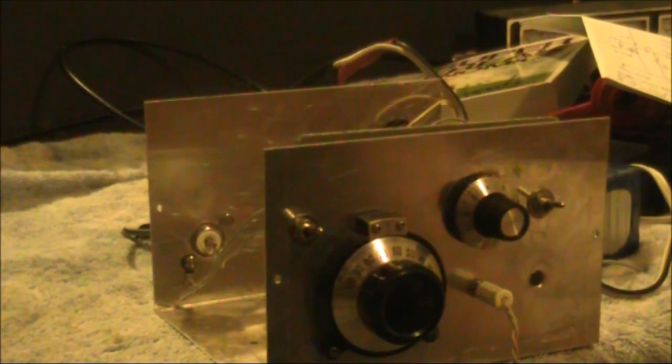Regen receivers have the reputation of being a two-handed affair. If you adjust the regeneration control, you'll drift off frequency, so you need to touch up with the tuning control. That's also true if you've got an RF gain control, which this receiver doesn't have. Again, you'll get some frequency pulling.